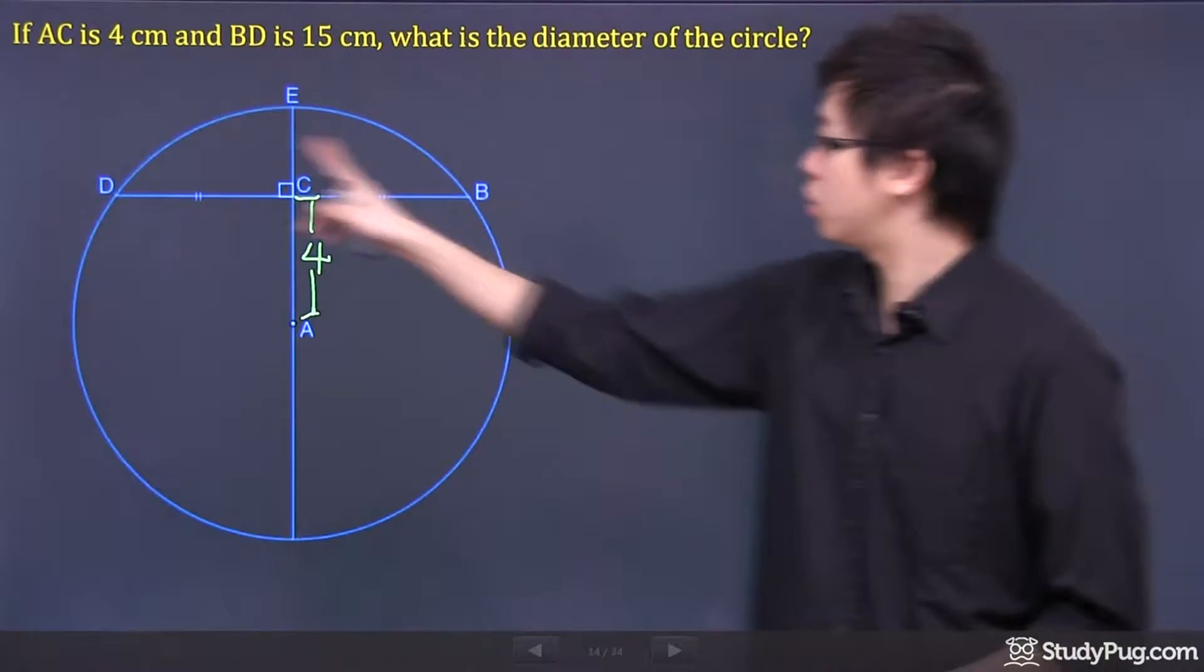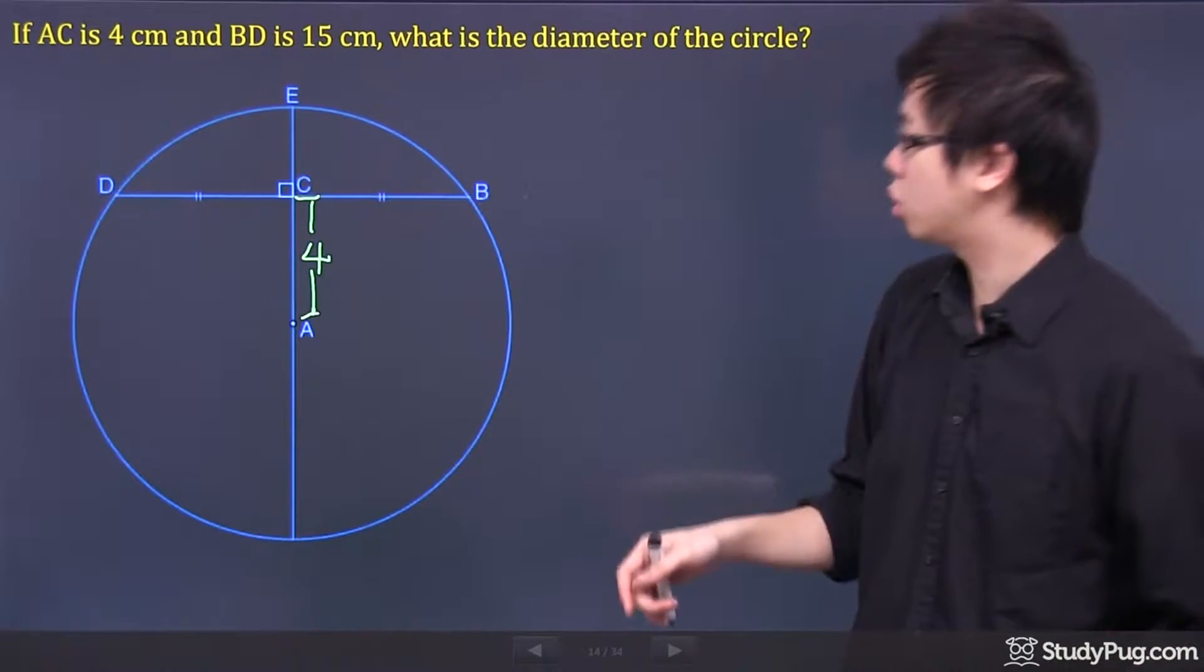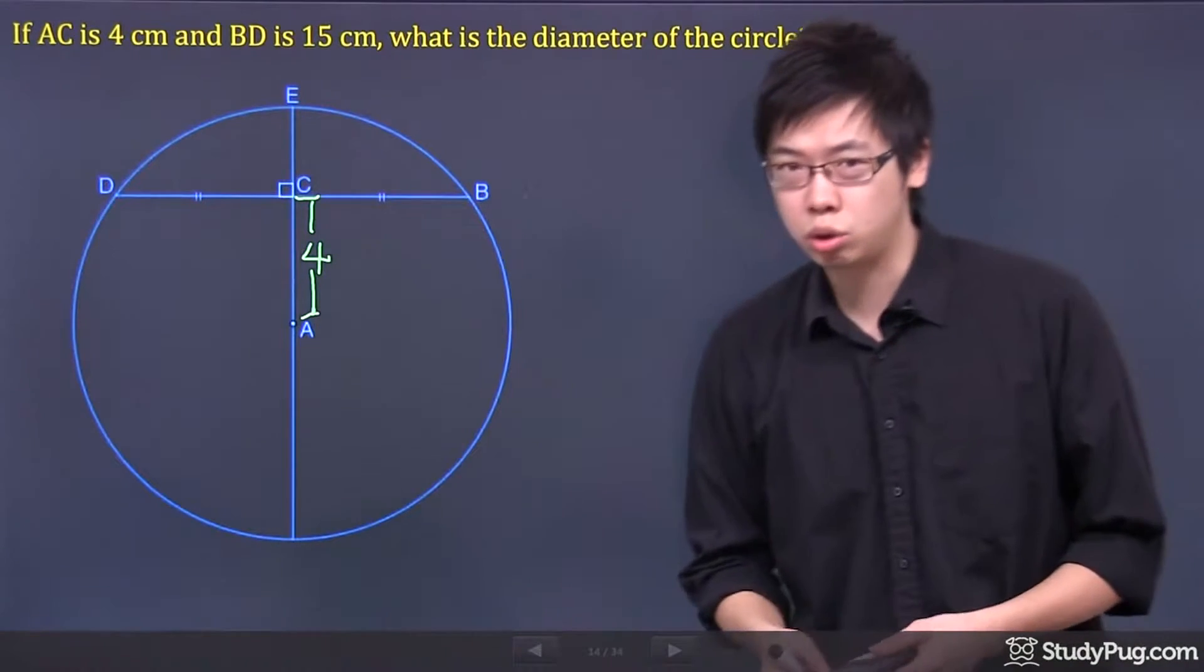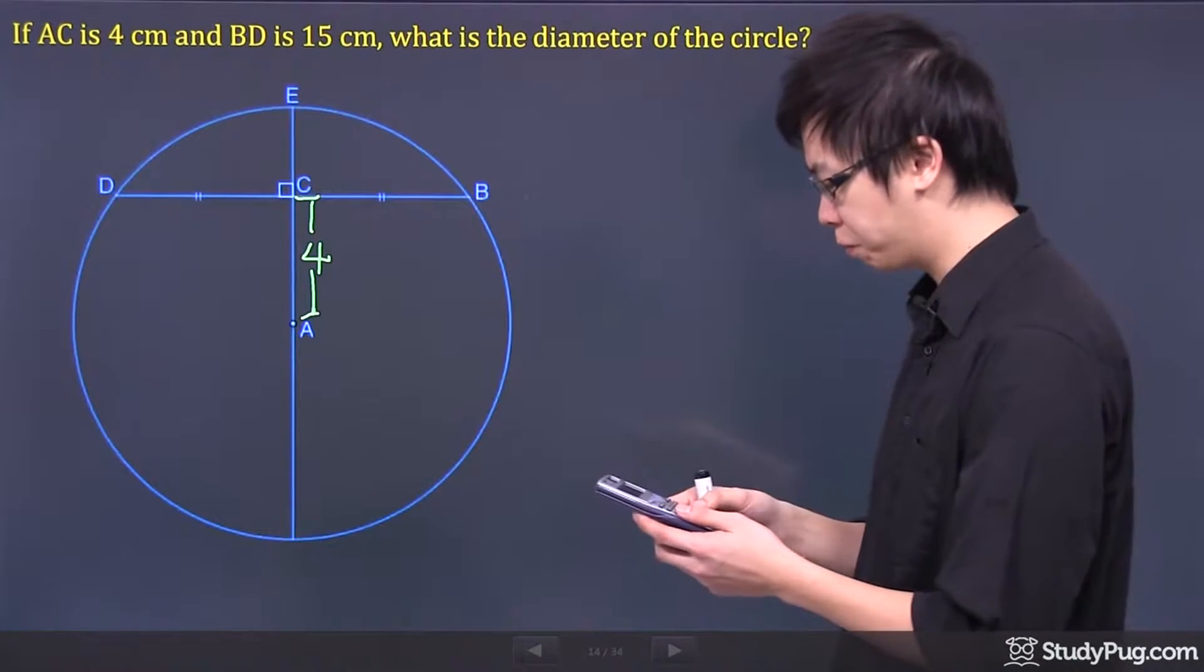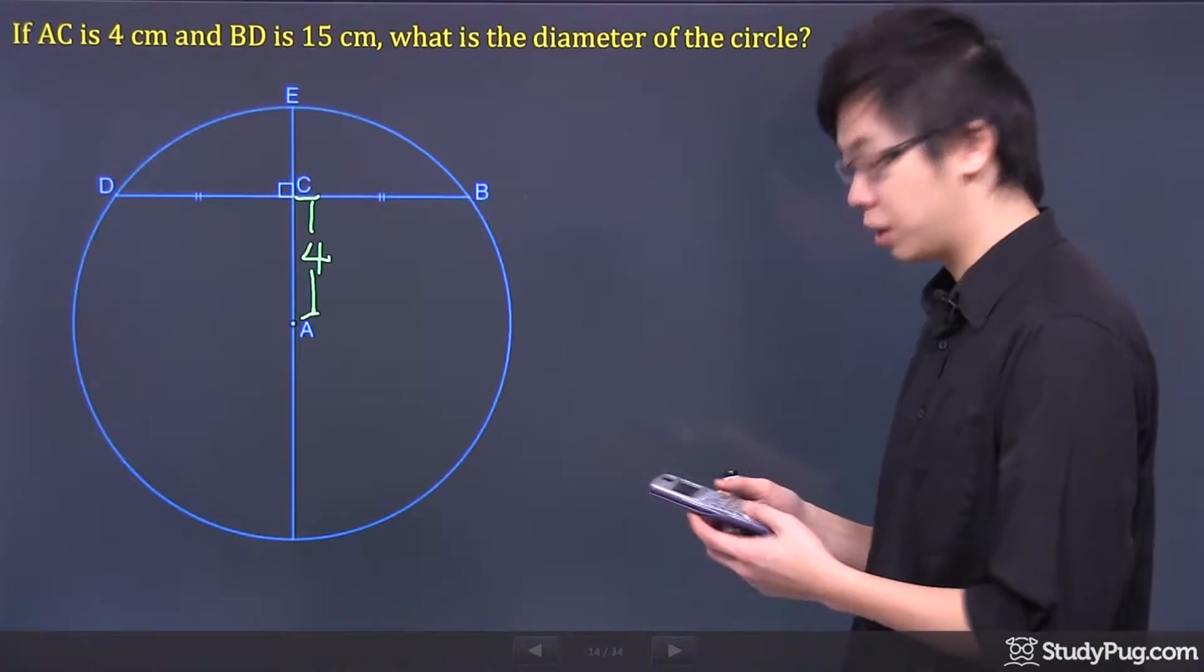And BD is from here to here. It's 15 centimeters in total, but instead of me doing the 15, I'm going to divide it into 2 first. So 15 divided into 7.5.